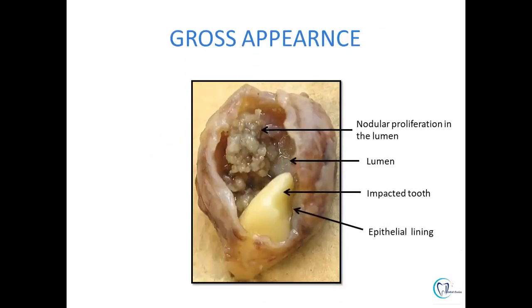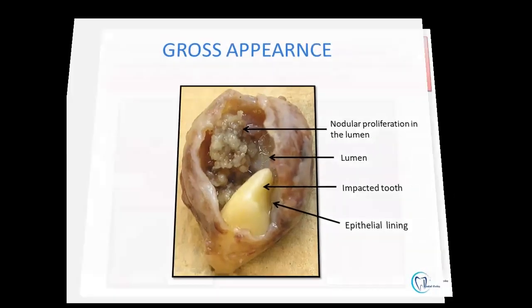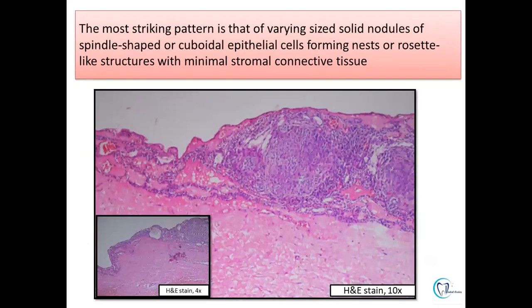Regarding the macroscopic appearance of AOT, it is found associated with an impacted tooth within a cystic cavity, where there is a lumen showing nodular proliferations surrounded by epithelium. In the histopathology, the most striking pattern is the presence of solid nodules of spindle-shaped and cuboidal cells forming rosette-like areas with minimal connective tissue stroma.